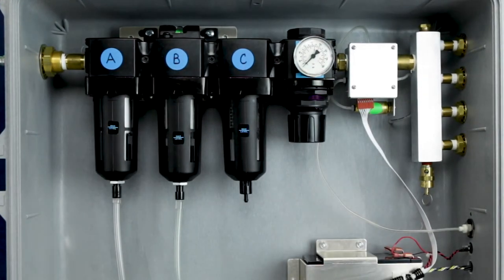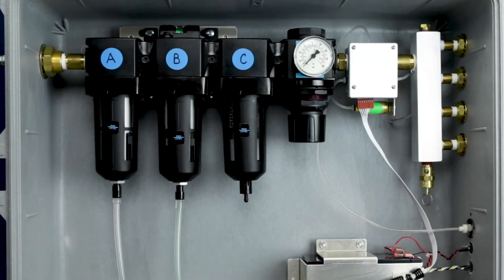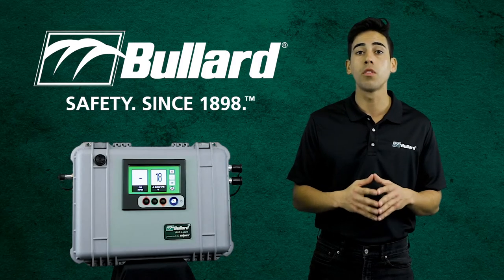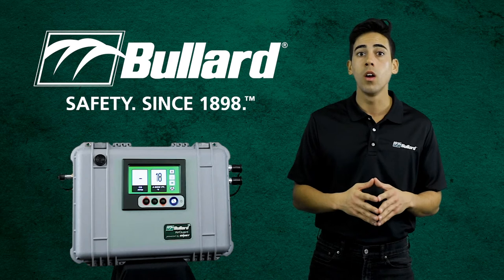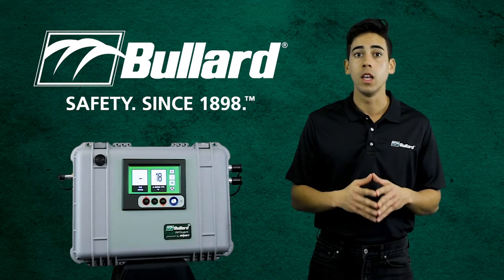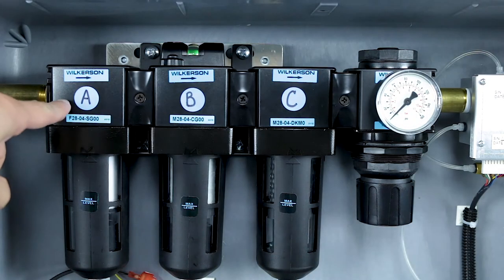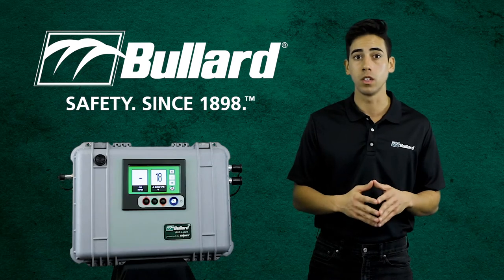After opening the AirGuard enclosure, the filter train is located on the upper left-hand side of the enclosure and consists of three filter bowls along with the pressure regulator. Going from left to right, Position A contains the 5 micron filter, which is a pre-filter.